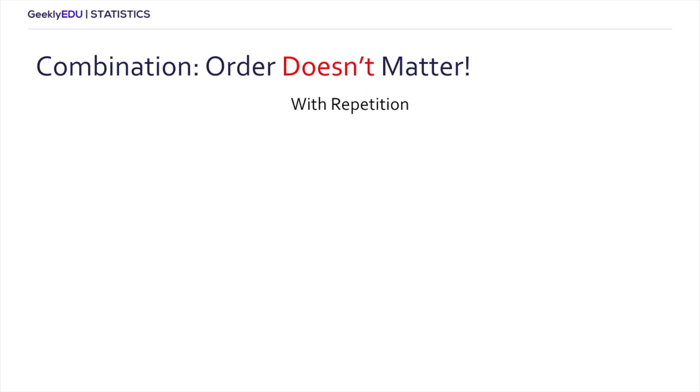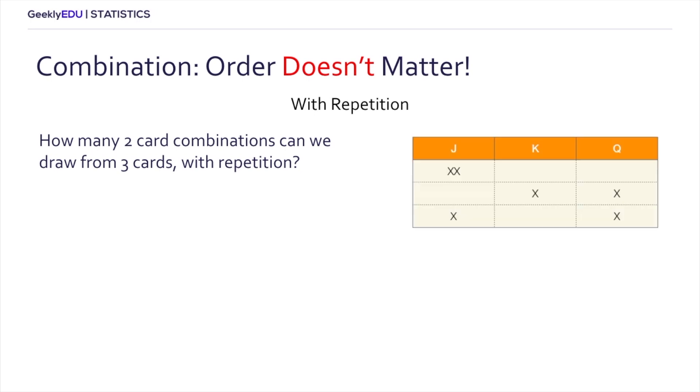So let's start by asking a question that is a variation of a different question we just discussed: how many two card combinations can we draw from three cards, however this time with repetition? To answer that, we'll start by drawing a table. Here we have a table with three columns where each column represents a type of card: the jack, the king, and the queen that we've seen before. And each row represents a particular combination. So in the first row we have two jacks, in the second row we have a king and a queen, and a jack and a queen in the third row.